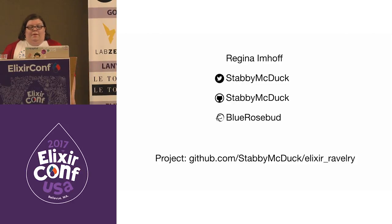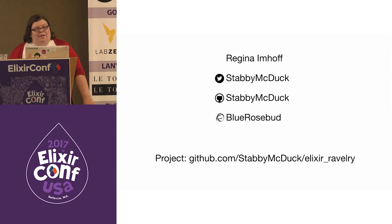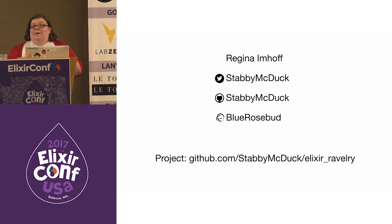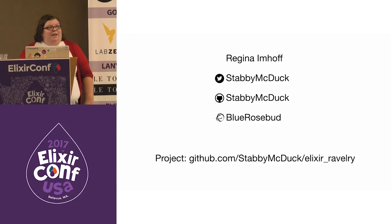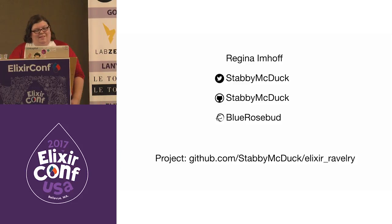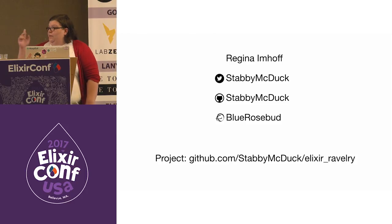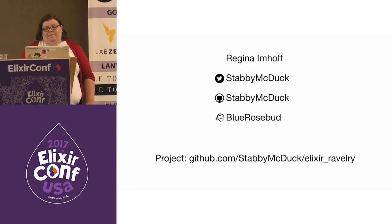If you're not familiar with Ravelry, you'll learn a lot more about that during this talk. To be super clear, I am not affiliated with Ravelry and I'm not affiliated with Neo4j. I'm just somebody who tried using it in an Elixir project. The repo for the project can be found at Stabby McDuck Elixir Ravelry.